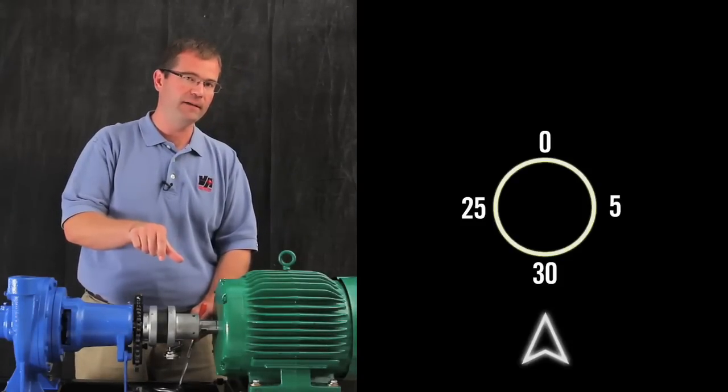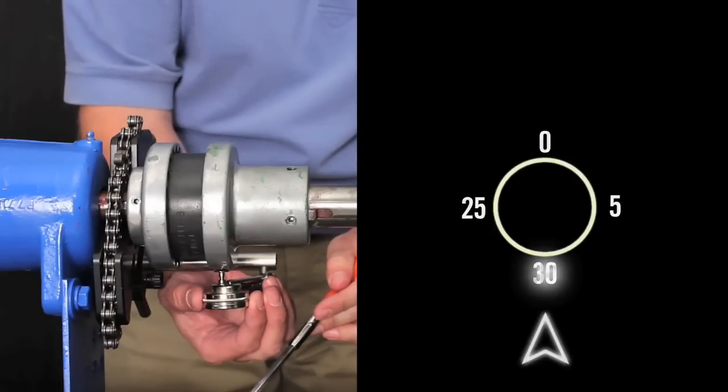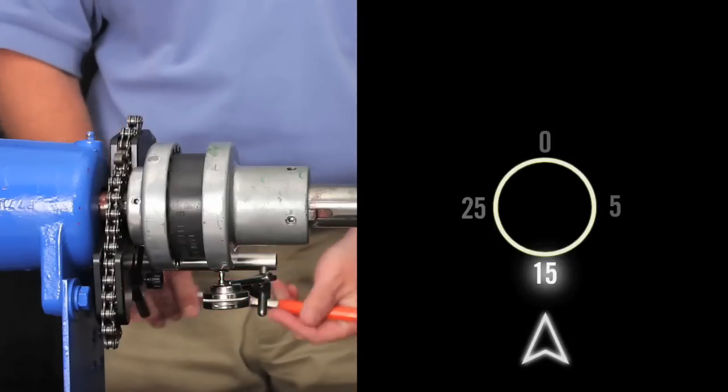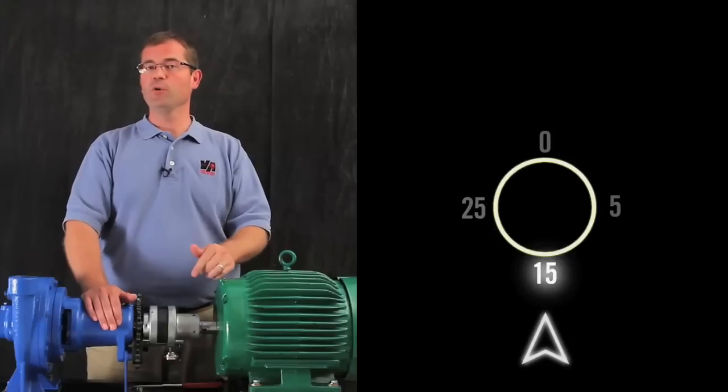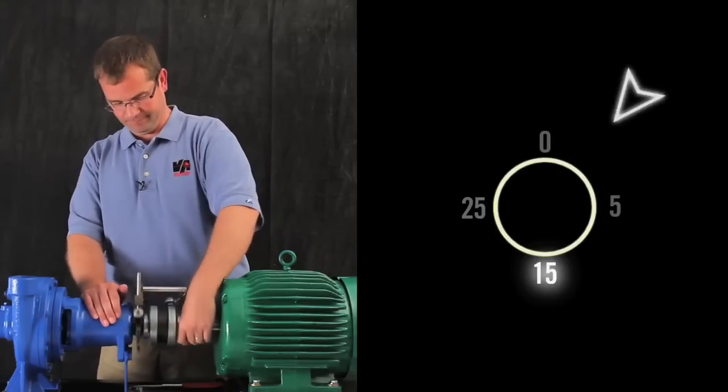I'm going to roll the dial halfway back to 0 or to 15. Now our dial is reading true position. Now if I roll the dial back to 12 o'clock, do you think it'll still read zero? Well, let's see.